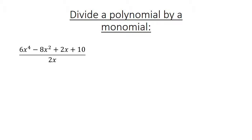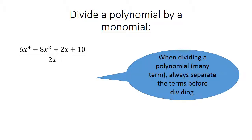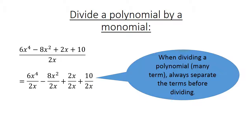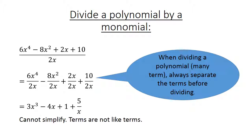Divide a polynomial by a monomial. Now we have 4 terms: 6x to the power of 4 minus 8x to the power of 2 plus 2x plus 10, all divided by 2x. When dividing a polynomial we always separate the terms before dividing. This equals 3x to the power of 3 minus 4x plus 1 plus 5 divided by x. We cannot simplify — the terms are not like terms. We just leave the answer like it is.